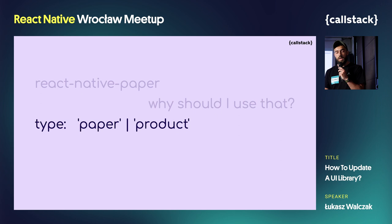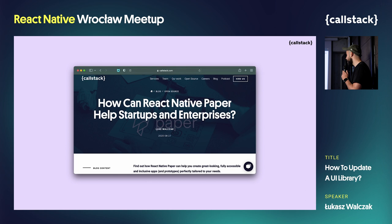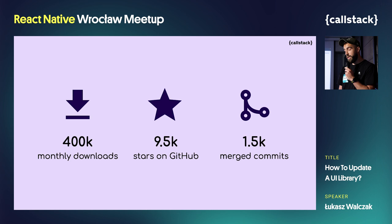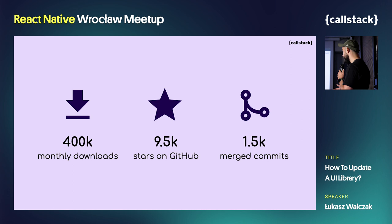We can say that Paper is a product, but it's also a solution in the product creation process and can definitely help startups or enterprises. Three years ago I wrote an article about it and it's still valid, so if you would like to dive more into that aspect, I recommend you check the Callstack blog. Quick look at the statistics: since the library is constantly maintained and developed, we have over 400,000 monthly downloads, 9,500 stars on GitHub and 1,500 merged commits.